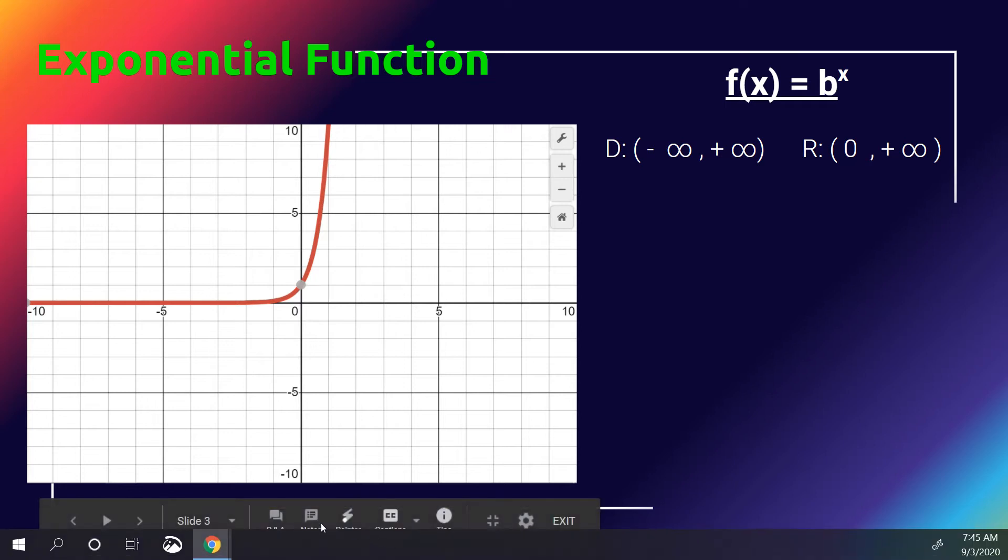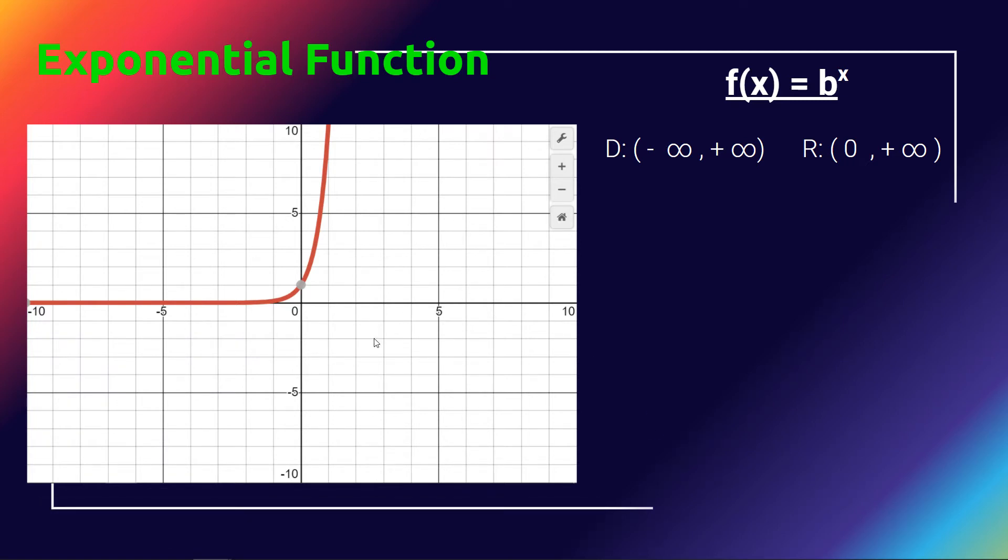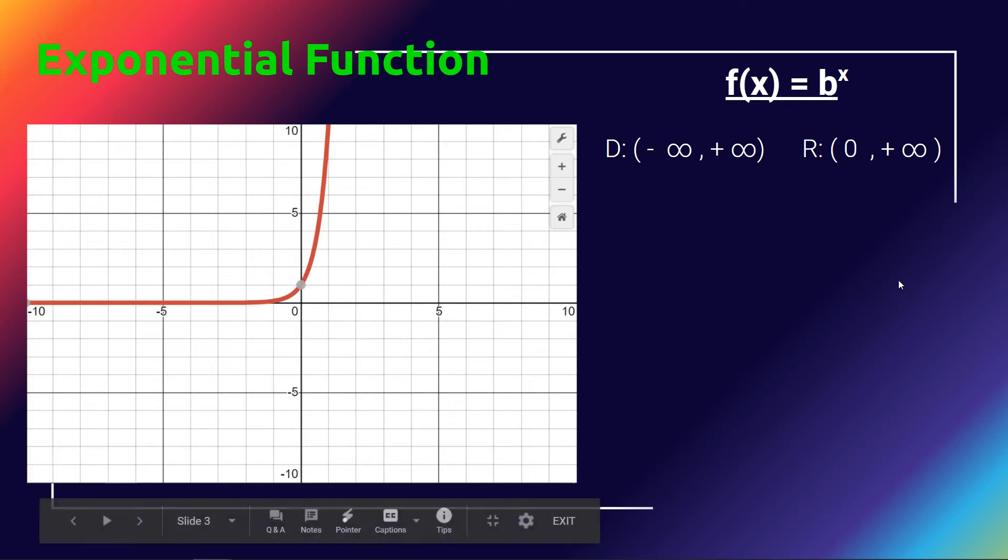When we're looking at the graph and we can't zoom in, it's really hard to see that, but if we zoomed in very closely, we would see it coming close, close, close, never actually touching. So the range is all positive y values, except for 0 and nothing negative.